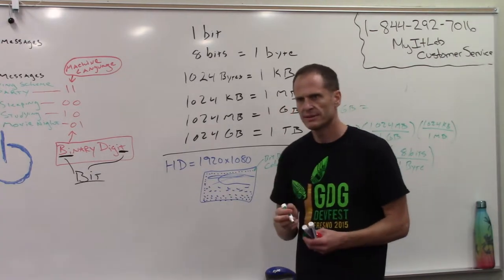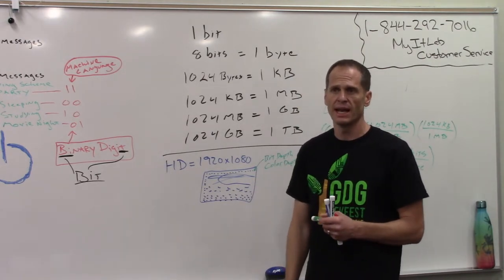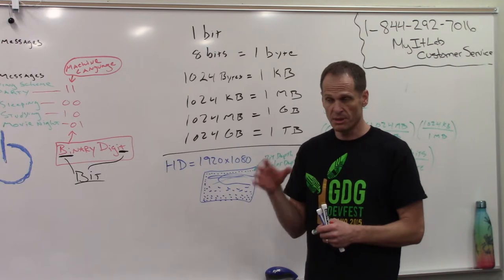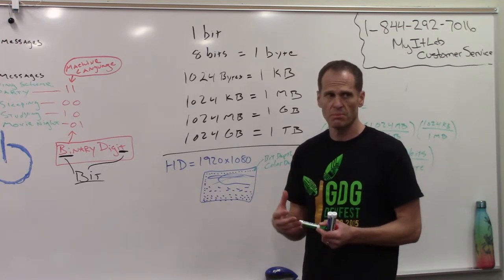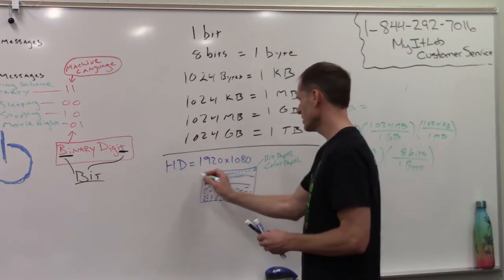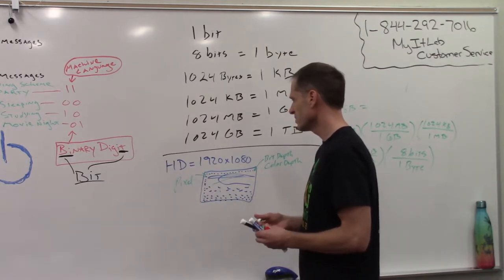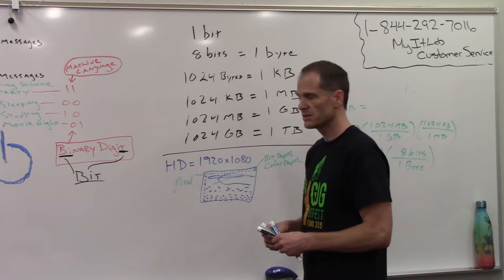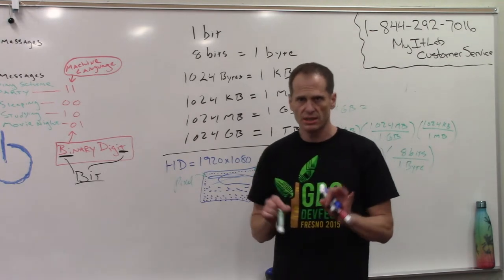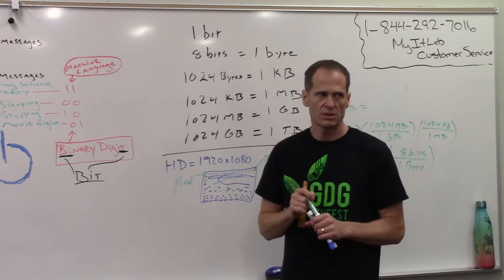If we use one bit for each dot, and instead of calling them dots, I'm going to call them by their real name, which is picture element. It's an element which makes up a picture. And I'm going to abbreviate that once more and call it a pixel. For each pixel, we have a bit depth or color depth. We need to store color information for each dot. What color is each pixel?